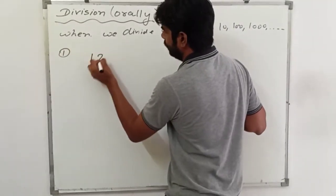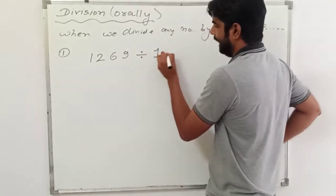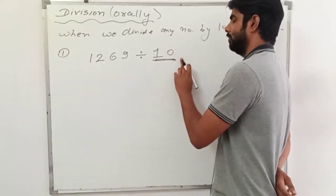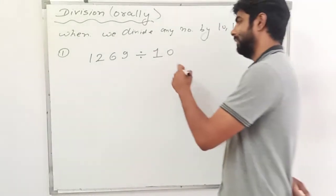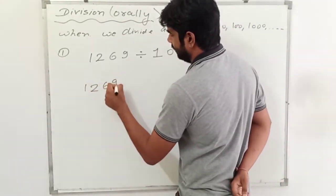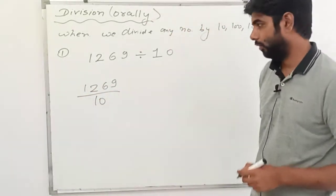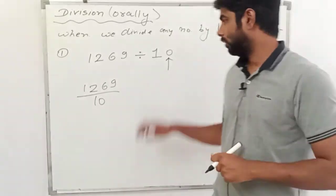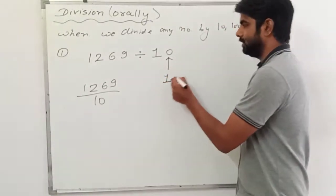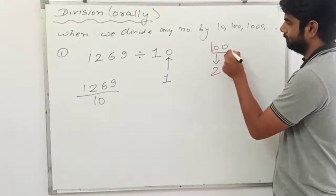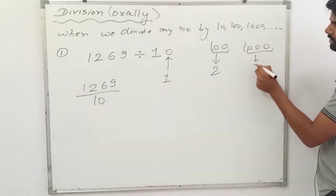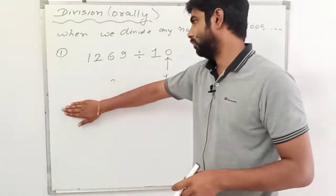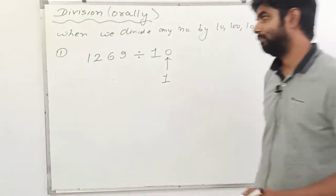The first example is 1269 divided by 10. Whenever we have 10, 100, or 1000 as the divisor, the first thing we have to check is how many zeros are there. If it is 10 there is one zero, if it is 100 there are two zeros, and if it is 1000 there are three zeros. Here in 10 there is one zero.